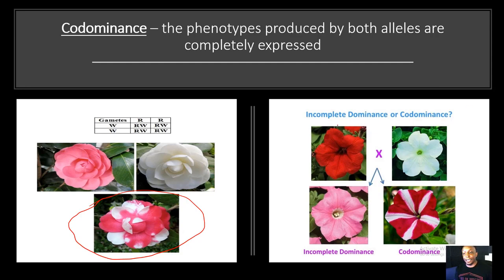Let's take a look at the difference between incomplete dominance and codominance. Here's a red flower crossed with a white flower — notice that neither the red nor the white is showing in the resulting offspring; this is incomplete dominance, where there's a blending of both alleles. But in codominance, we have a red flower crossed with a white flower where both traits are showing — here's the red and here's the white. So incomplete dominance is a blending of the two alleles, while in codominance you actually have both traits displayed phenotypically in the resulting offspring.